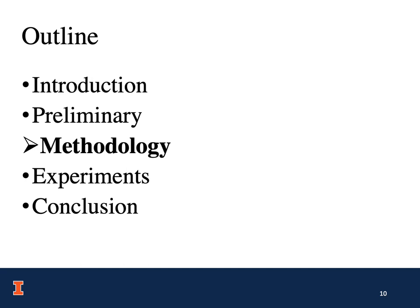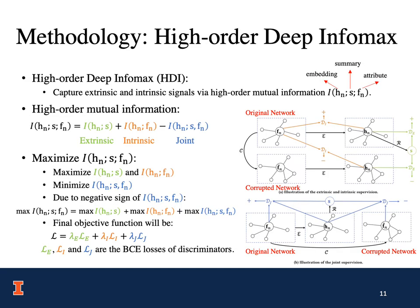We firstly propose a novel training signal for self-supervised learning on graphs, which is called high-order deep infomax, HDI for short. HDI is able to jointly capture the extrinsic and intrinsic signals, and HDI is based on the high-order mutual information between node-embedding H, the summary vector S, and the node attribute F. As shown in the equation, the high-order mutual information can be decomposed into three mutual information terms with two random variables. The first is the mutual information between H and S, which is the extrinsic signal. The second is the mutual information between H and F, which is the intrinsic signal. The third is the mutual information between H and the joint random variable of S and F, which is the joint signal.